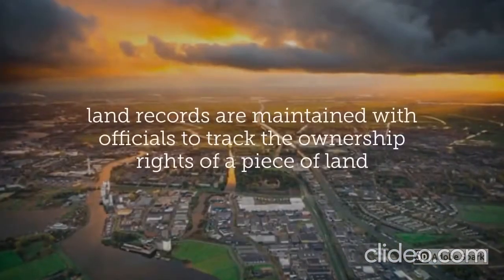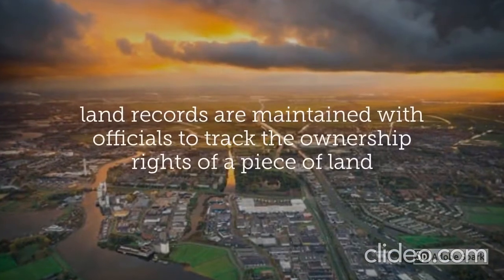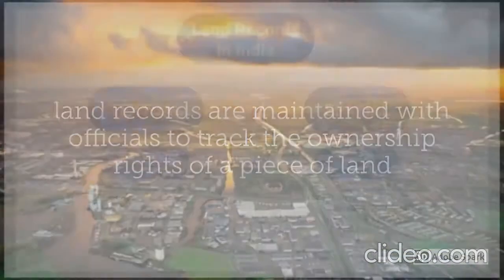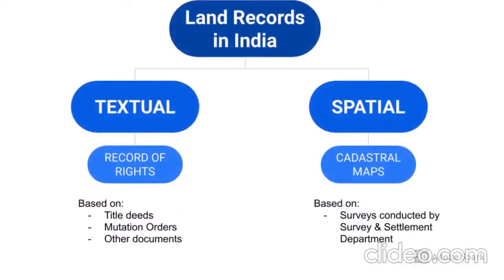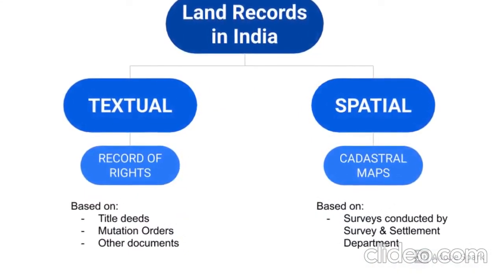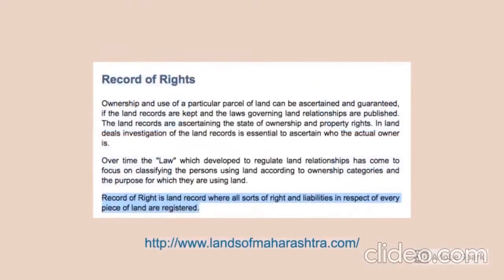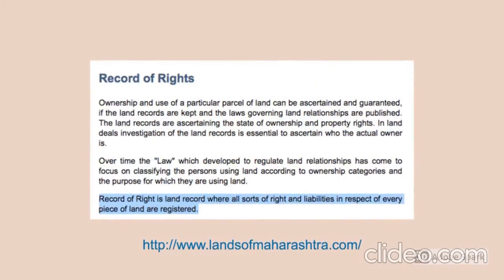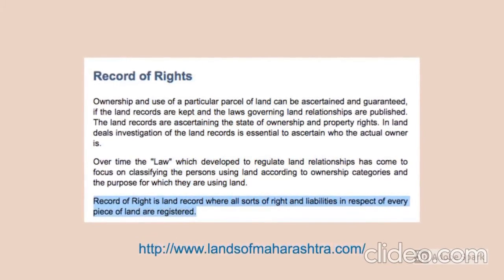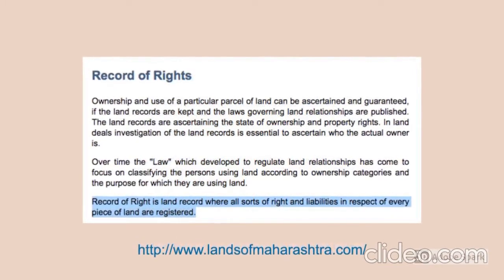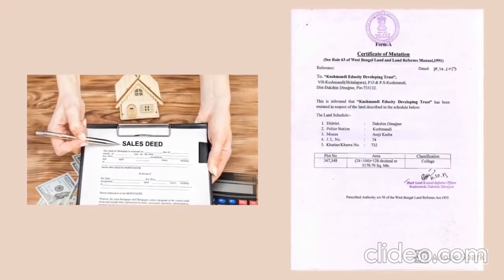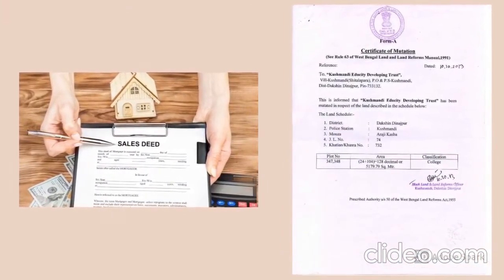Land records are the data tracking the ownership and status of a particular piece of land, maintained with a government official. In India, they can be divided into two broad categories: textual and spatial. Textual records include the record of rights, which is the primary record reflecting the details about who has rights over a piece of land. This is determined through conveyance deeds and mutation orders.